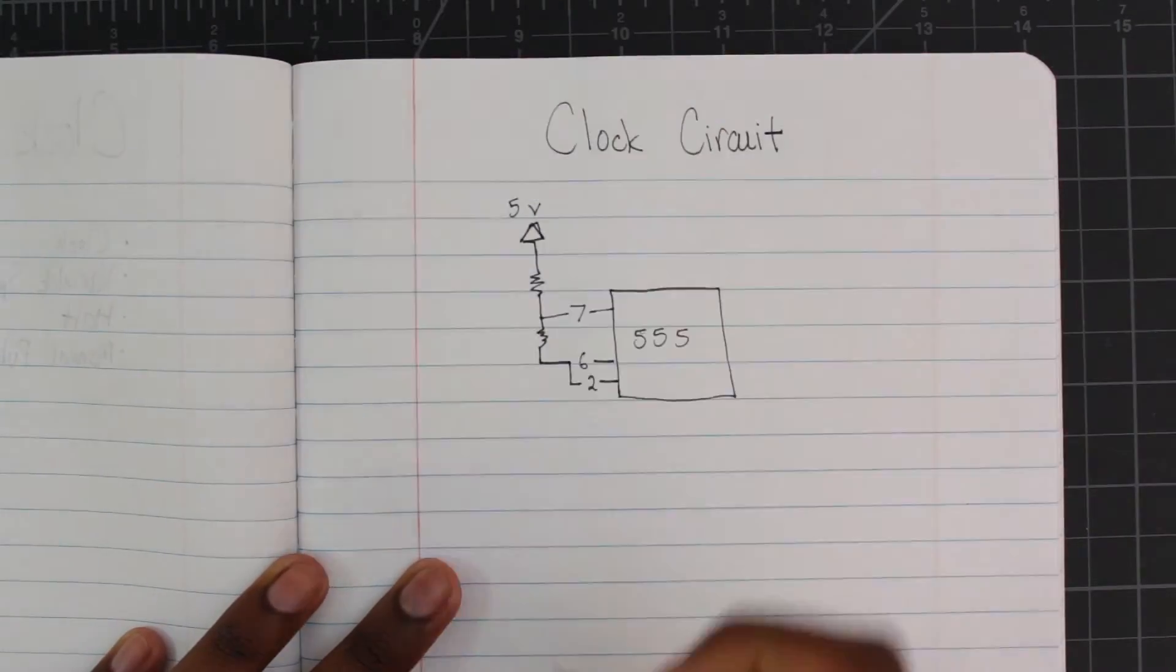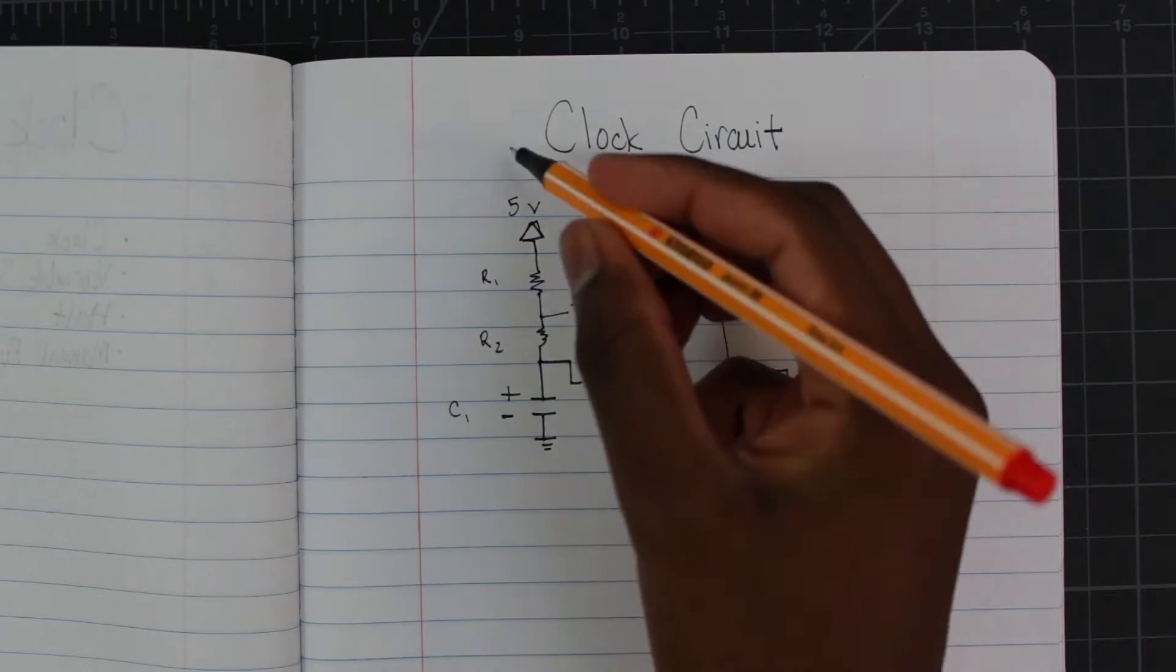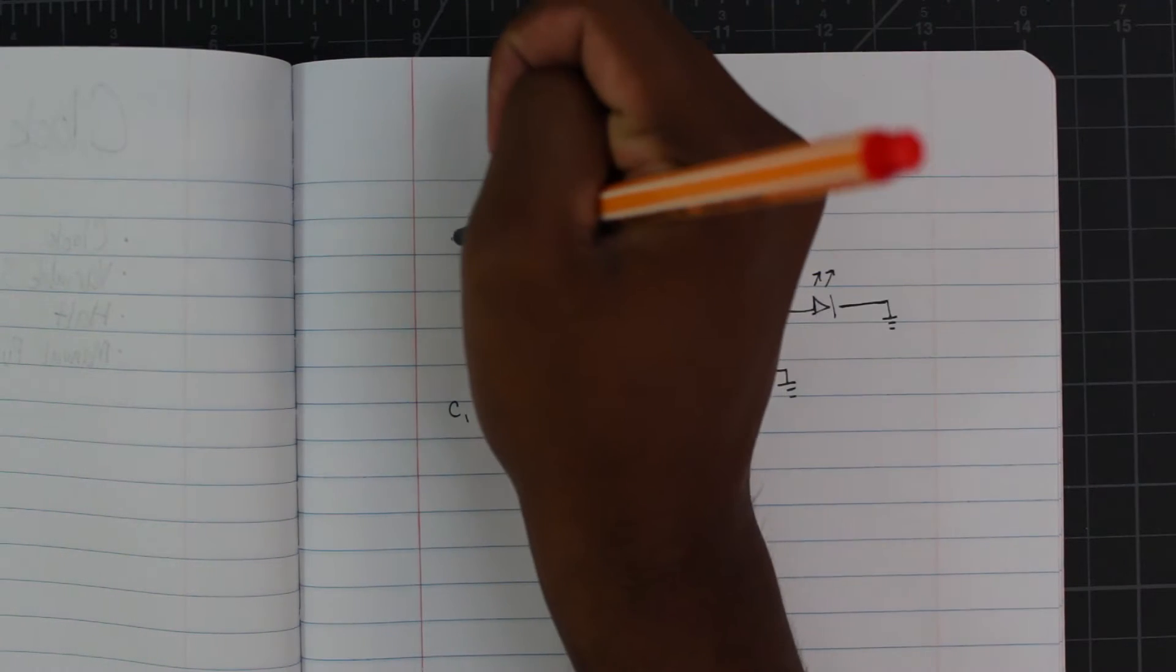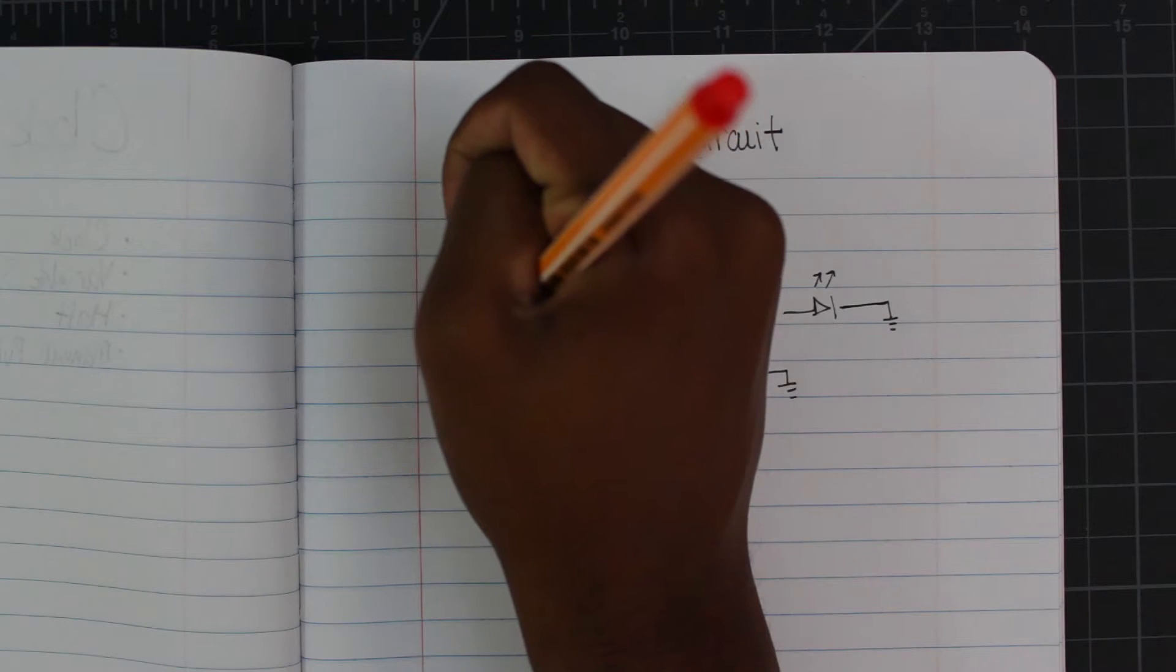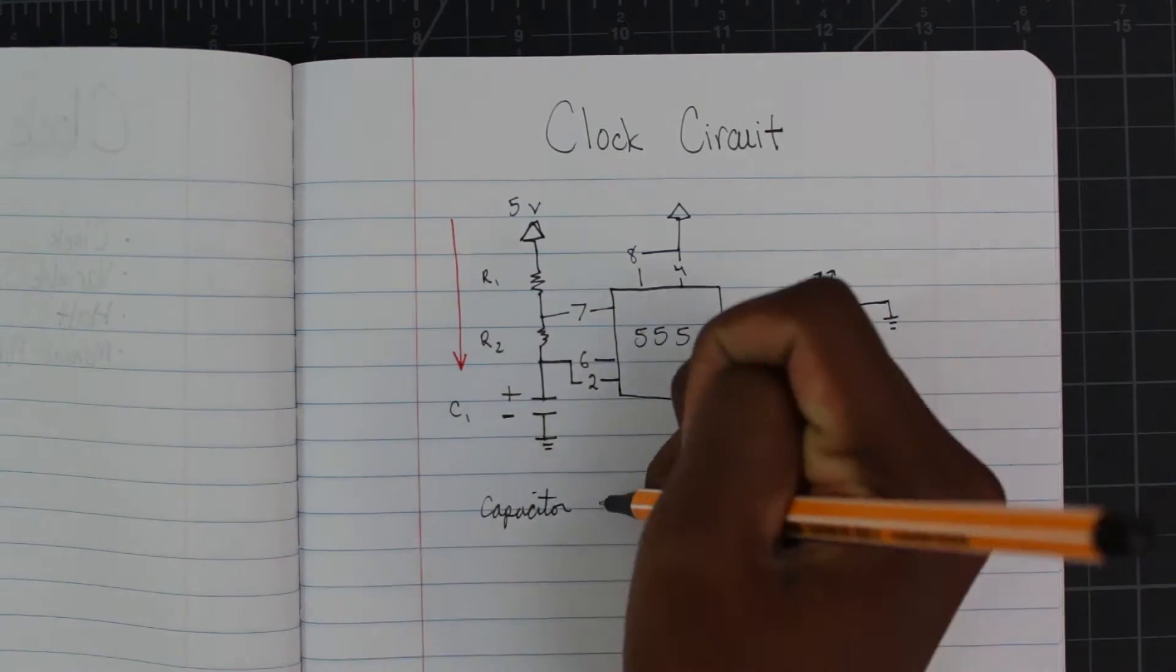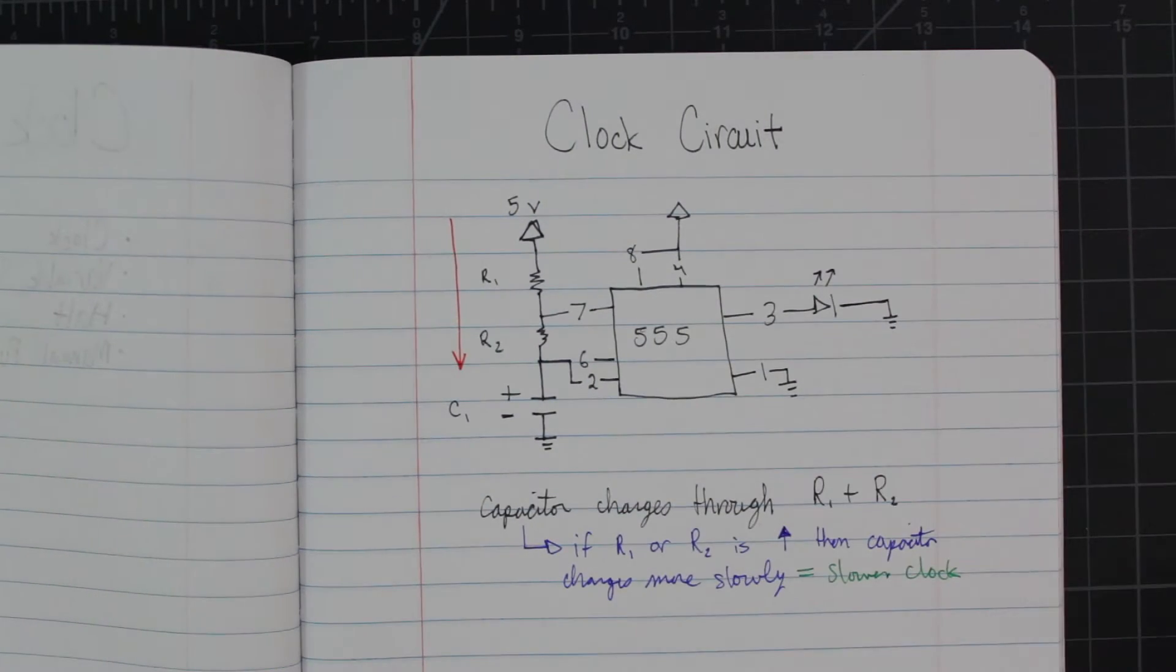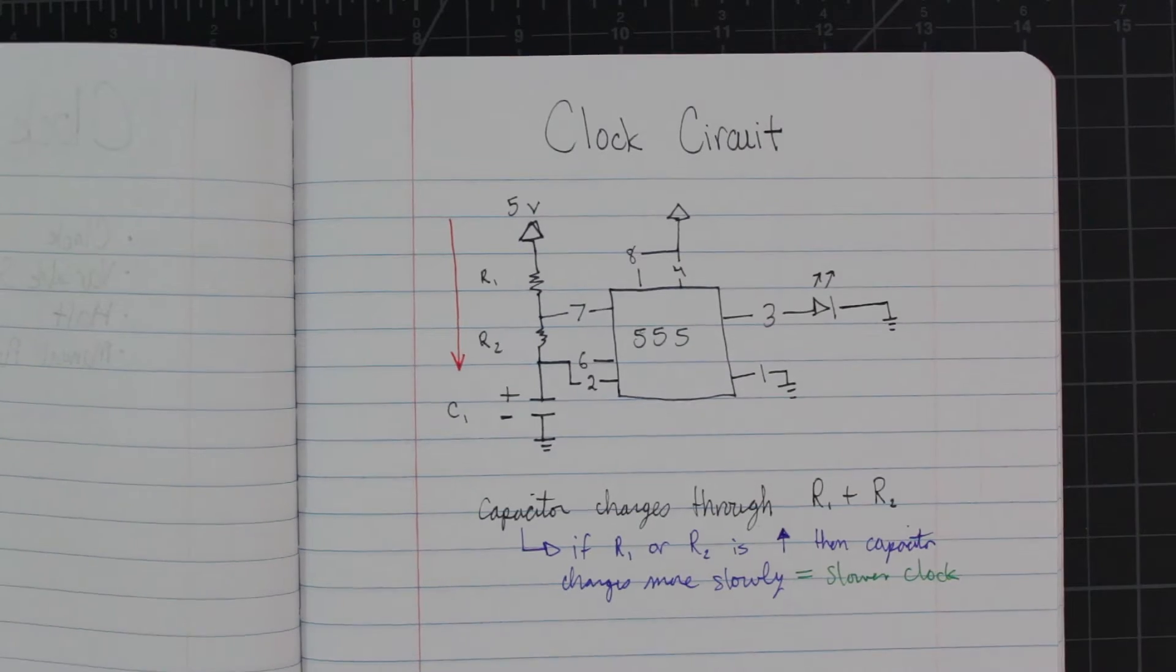Okay, so currently our clock looks like this. Now I don't want to explain how the 555 timer works right now, but the important thing to know is that this capacitor charges and discharges, and the rate at which that happens defines the speed of the clock. Now this capacitor charges through R1 and R2. So that means if R1 and R2 were bigger, then the capacitor would charge more slowly. This means that the clock is slower.